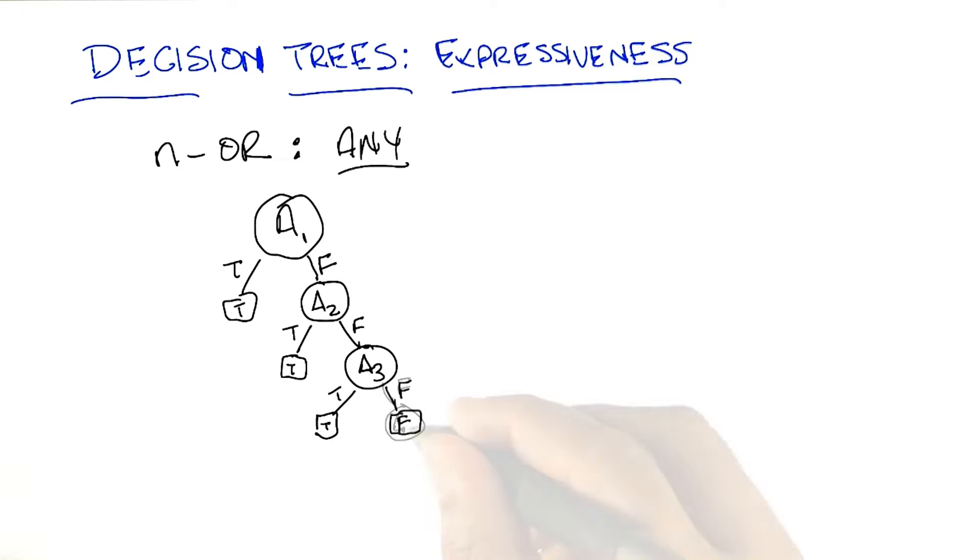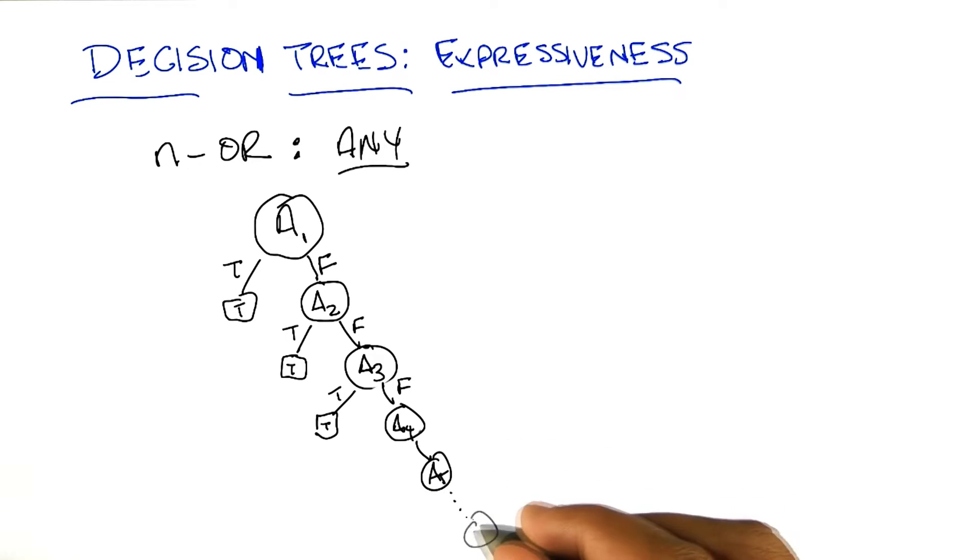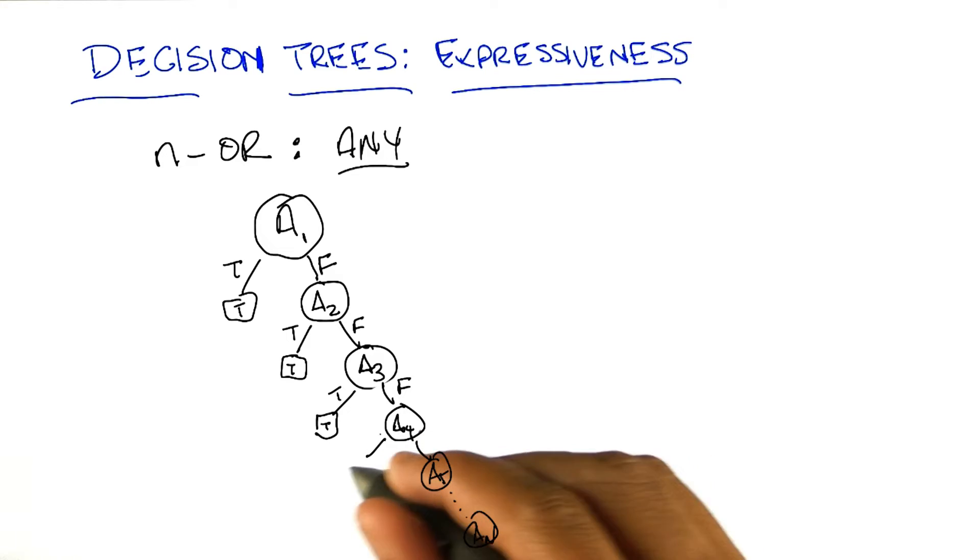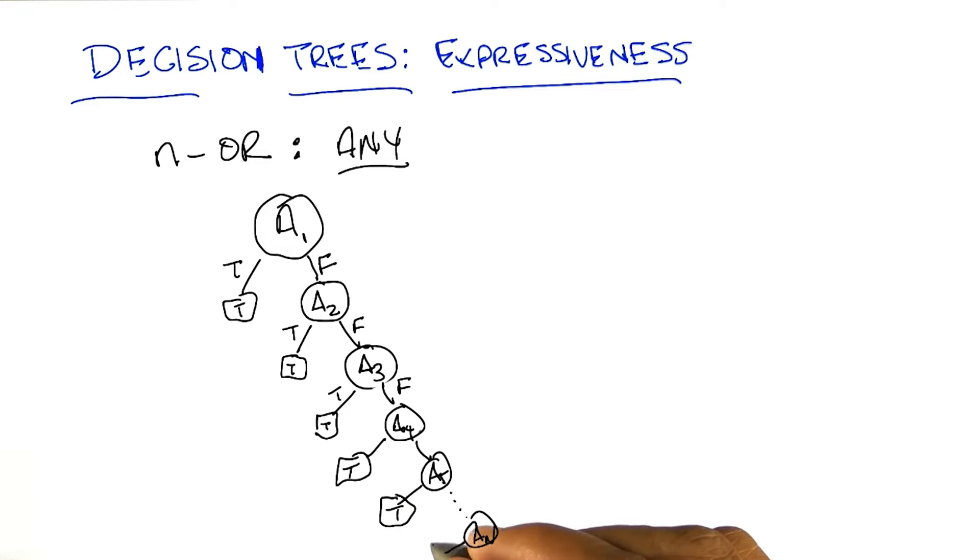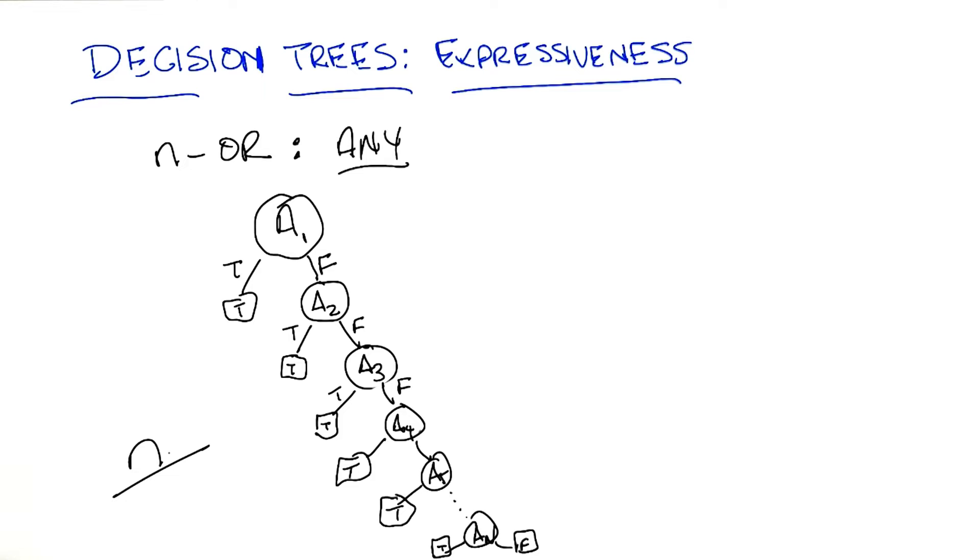But what if there were five? Then we need one more node. What if there were n? Then we need n minus four more nodes. Right. So what you end up with in this case is a nice little structure around the decision tree, and how many nodes do we need? Looks like one for each attribute, so that would be n. N nodes. Exactly right.